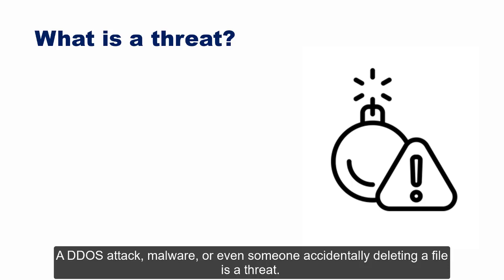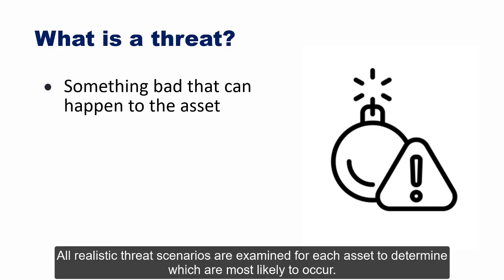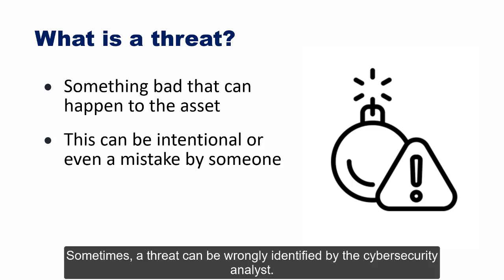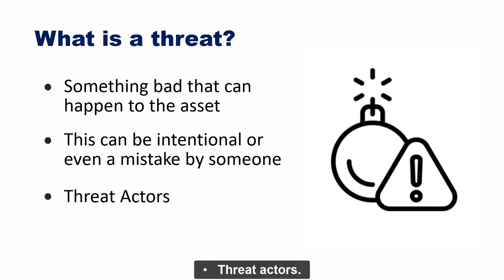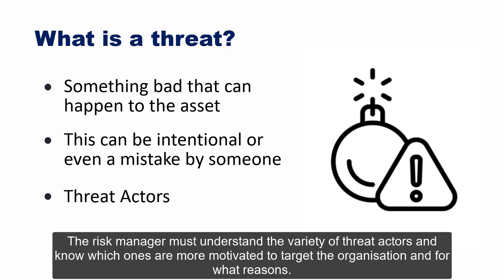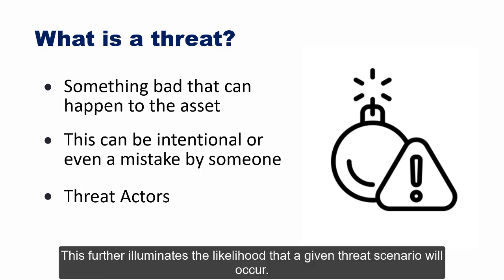What are the things that could happen to an asset? A DDoS attack, malware, or even someone accidentally deleting a file — these are threats. All realistic threat scenarios are examined for each asset to determine which are most likely to occur. Sometimes a threat can be wrongly identified — considered a false positive — resulting in a waste of resources. The risk manager must understand the variety of threat actors and which ones are more motivated to target the organization.